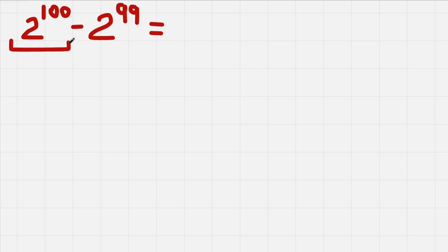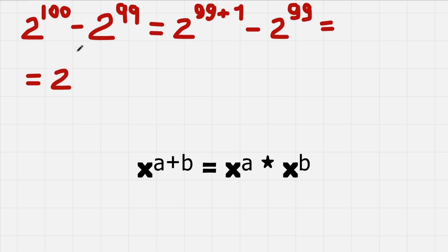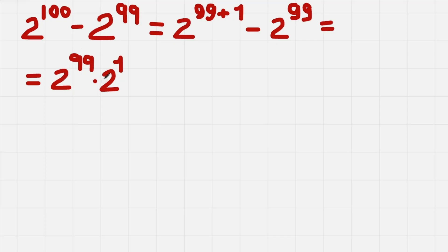We'll start by rewriting 2 to the power of 100 in another form. We write it as 2 to the power of 99 plus 1, and we also have minus 2 to the power of 99. We then write 2 to the power of 99 plus 1 as a multiplication using exponent rules: 2 to the power of 99 multiplied by 2 to the power of 1.